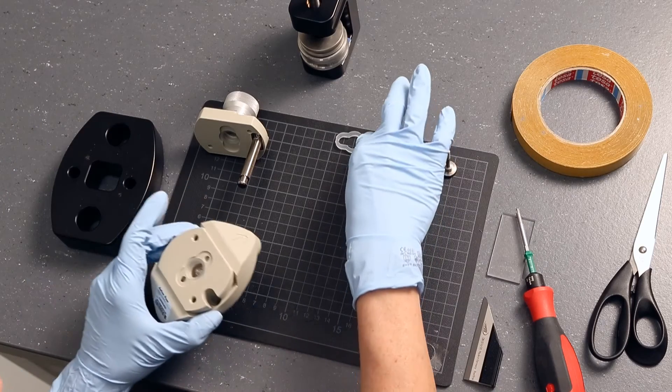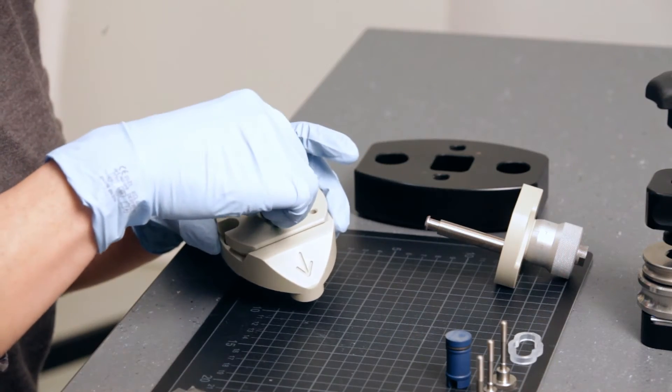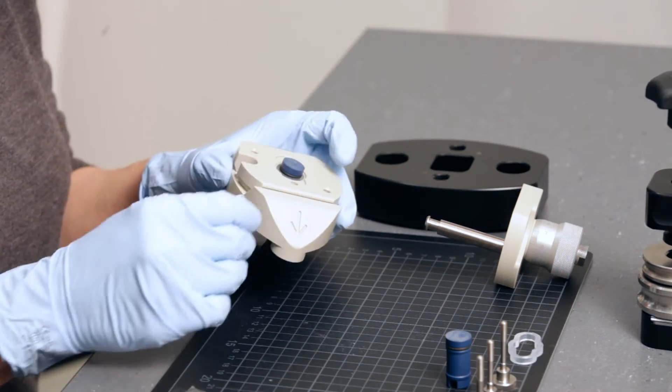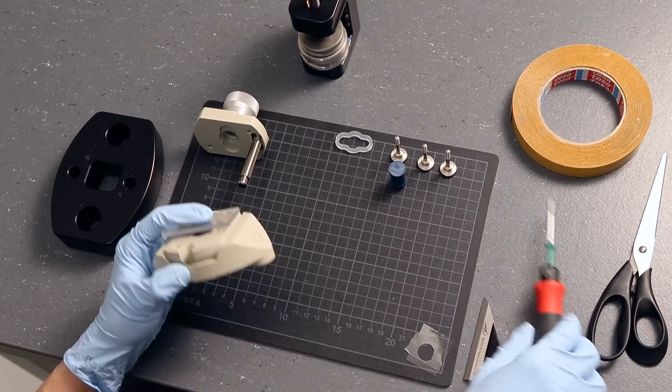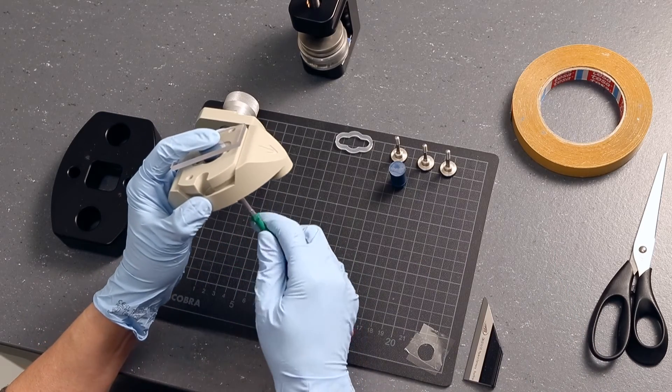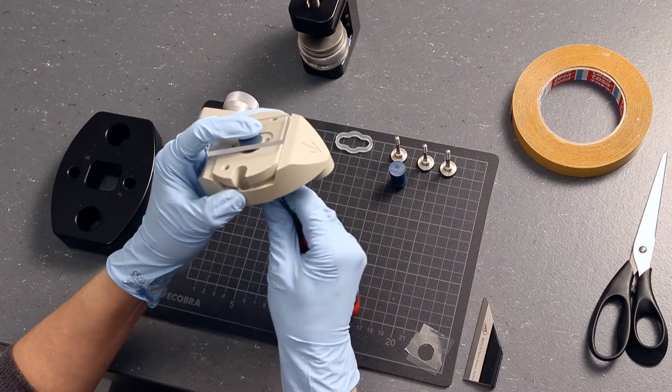Insert the small sample holder in the lower part of the cell. Use the support plate to push the sample holder into the recess while you lower its position with a screwdriver.